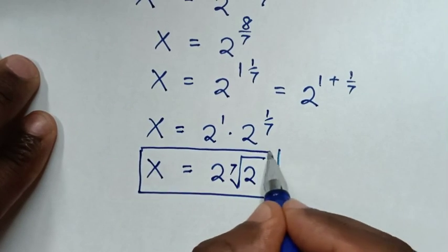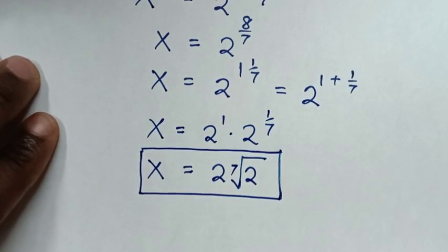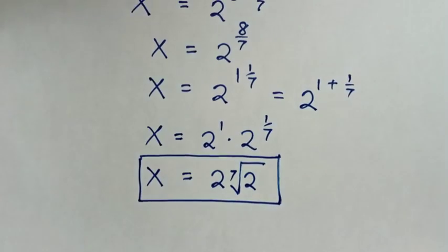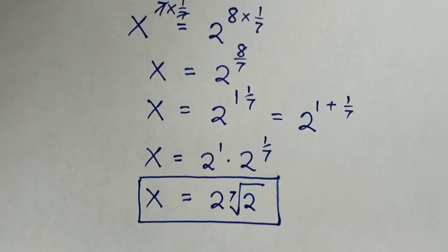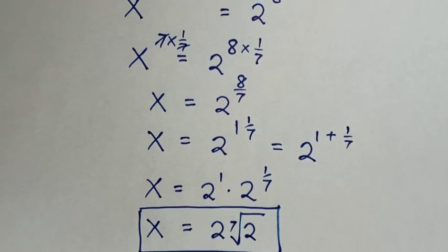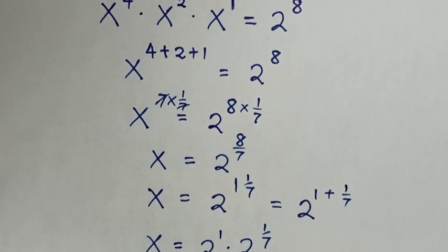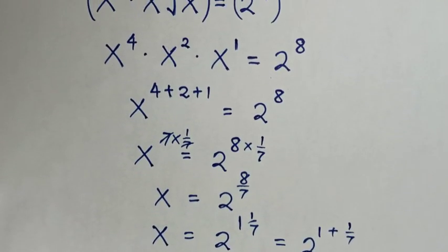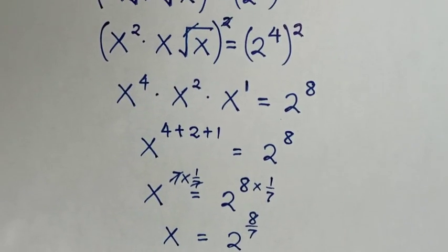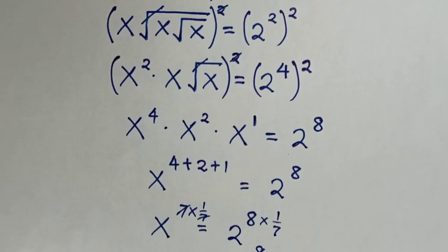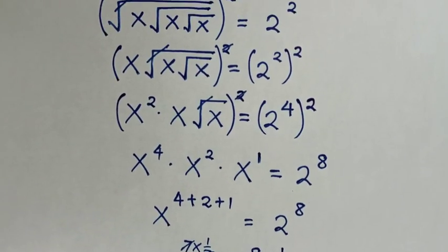Therefore, x is equal to 2 times the 7th root of 2. Don't forget these steps — subscribe to my channel and see you in the next video. Bye Bye!